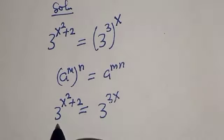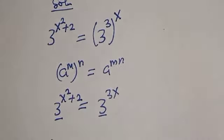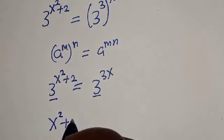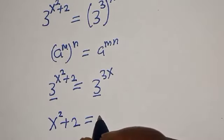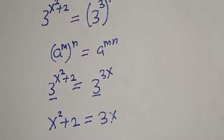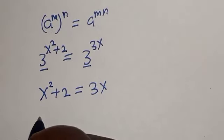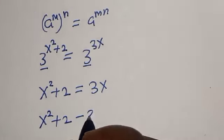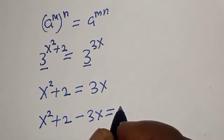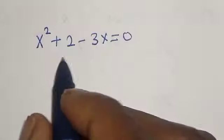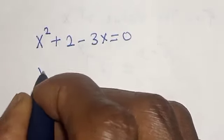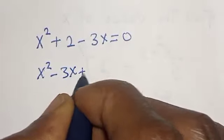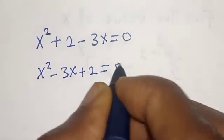Now they have the same base, 3. We work with the exponents: s squared plus 2 is equal to 3s. Then s squared plus 2 minus 3s is equal to 0.